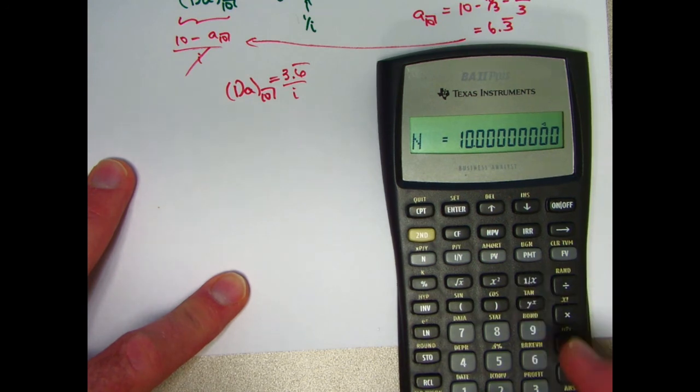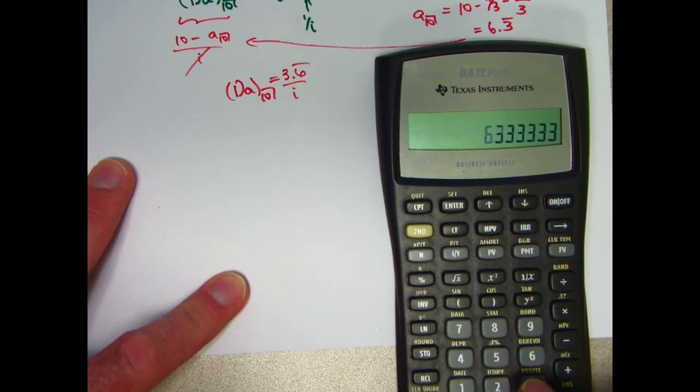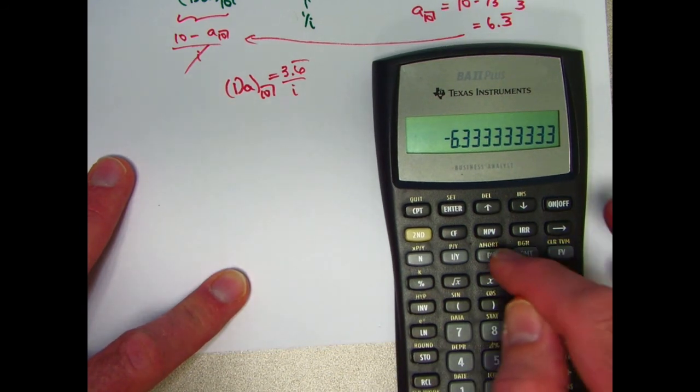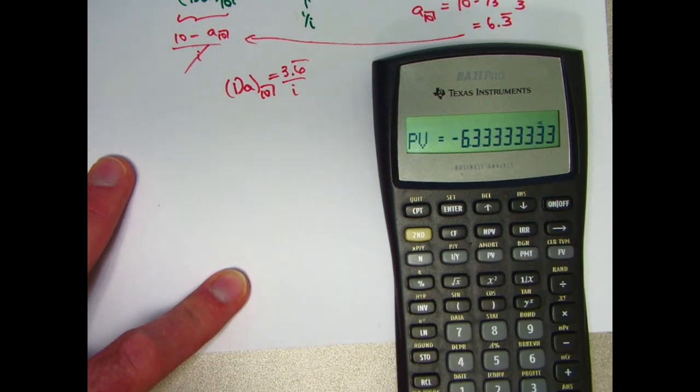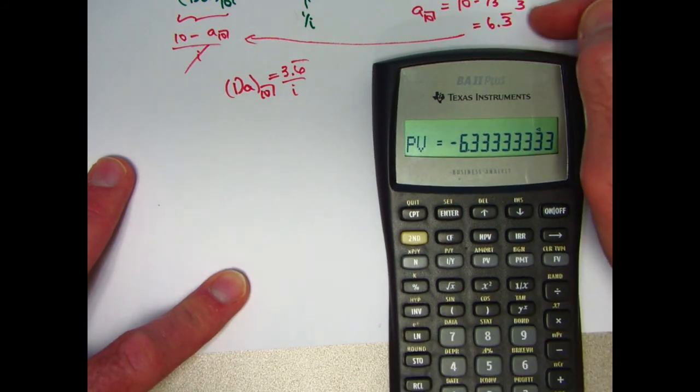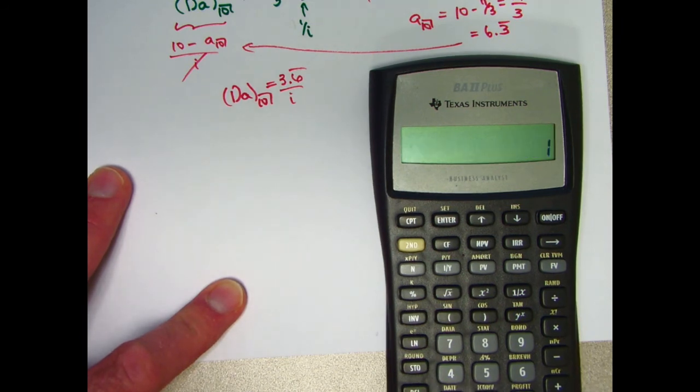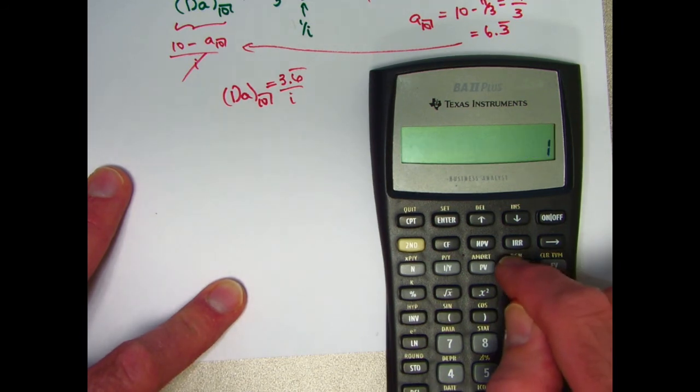So I'm going to go ahead and type 6.33333, put a negative sign, and put that into the present value, PV. And then the payments for such a level annuity are 1. And I'll think of those as positive. They're coming into Joe's account over time. Type 1. PMT.